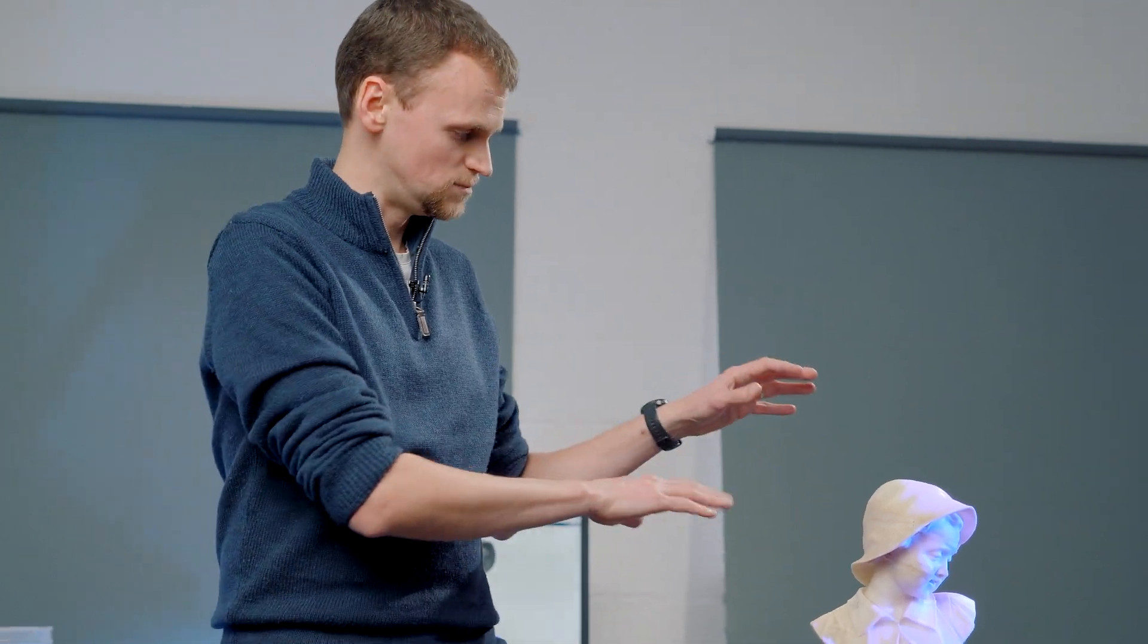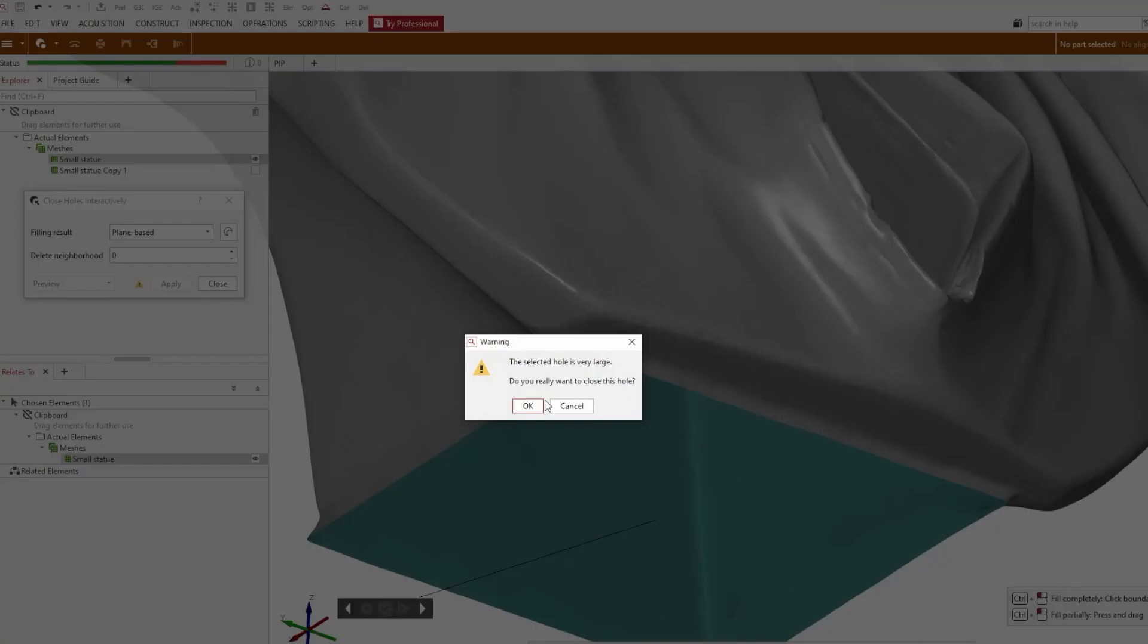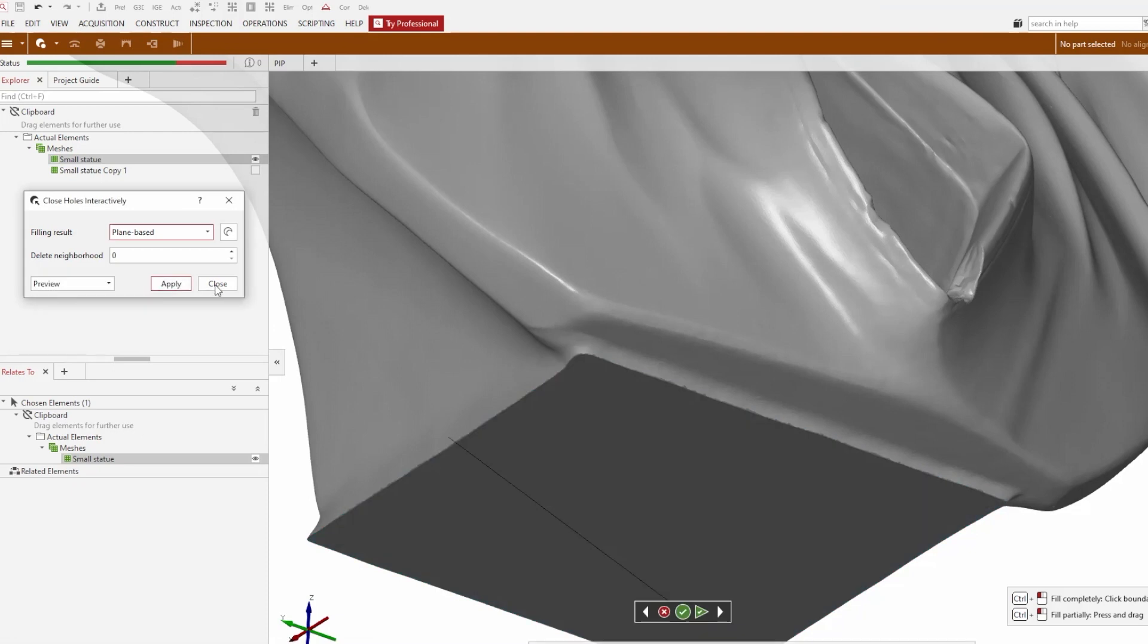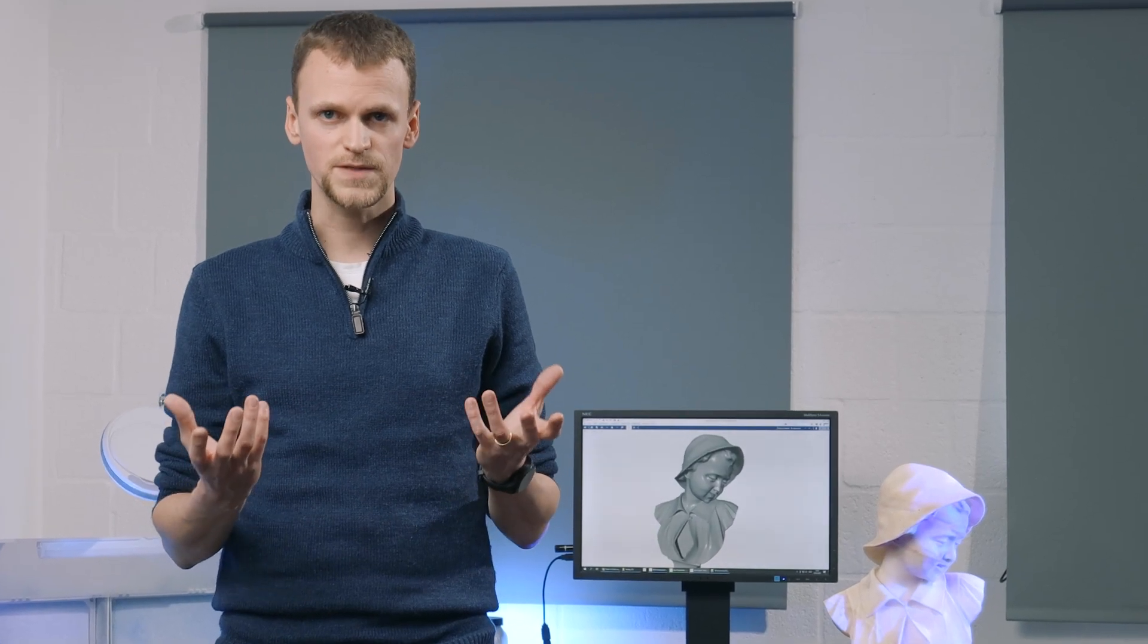After that, I would go to the middle and use that function again to split the scan in two separate pieces. These can then be printed individually and afterwards they can be glued together to make a bigger version of this statue.